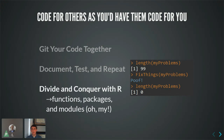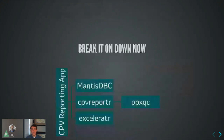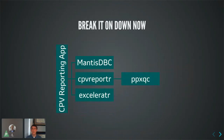For our architecture, at the top level we have the application. Below that, alongside common packages like dplyr, we created four internal packages: mantis-dbc connected to our Mantis data lake for the manufacturing division; cpv-reporter handled R Markdown compilation; the accelerator exported raw data for further analysis; and ppxqc was our workhorse for statistical process control, charting, and run rules.